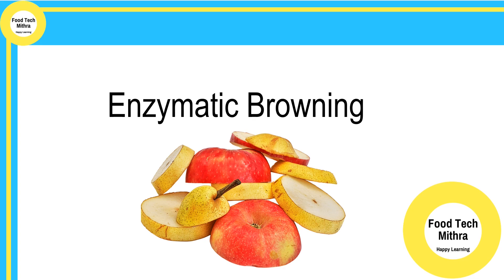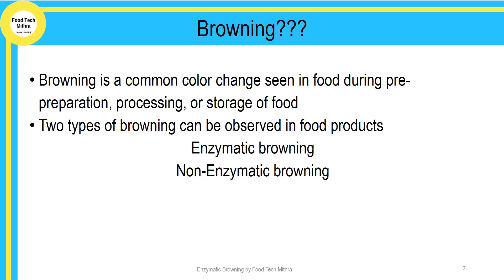Hi everyone, welcome to Food Tech Matra. Today we will see about the topic enzymatic browning. Browning is a common color change which is seen in food during pre-preparation, processing, or storage. There are two types of browning observed in food products: one is enzymatic browning and the other is non-enzymatic browning.